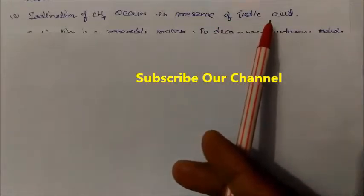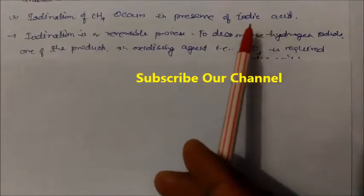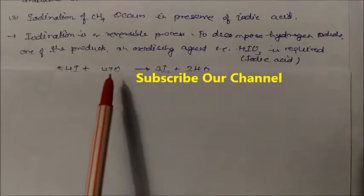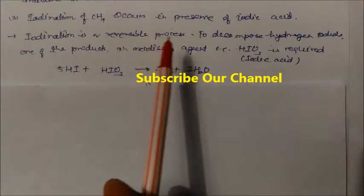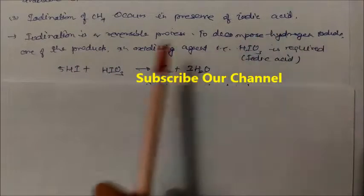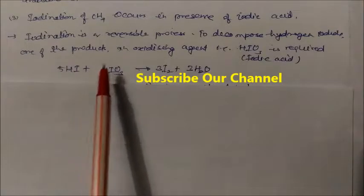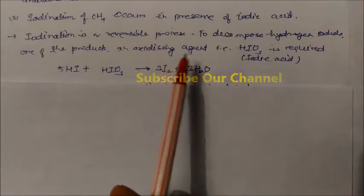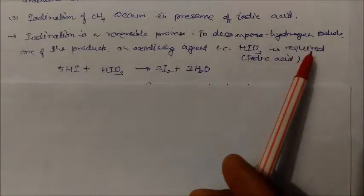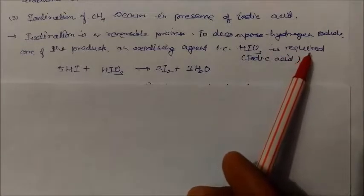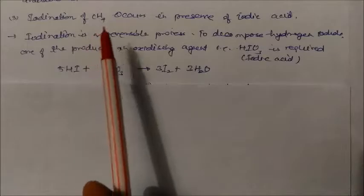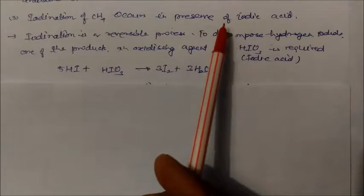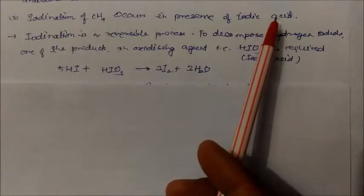Iodination of methane occurs in the presence of iodic acid. The reason is that iodination is a reversible process. To decompose hydrogen iodide (HI), one of the products, an oxidizing agent — HIO3 (iodic acid) — is required. The reaction is: HI + HIO3. Without iodic acid, the process would be reversible.